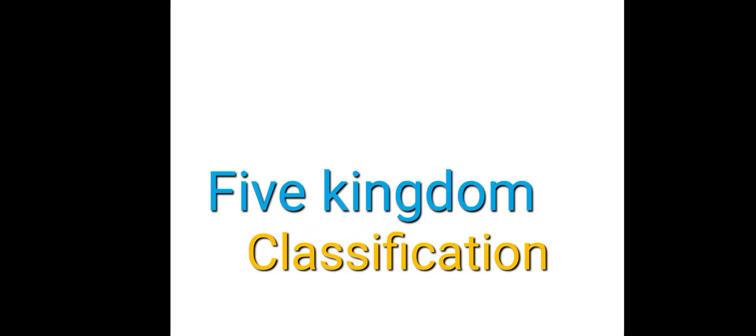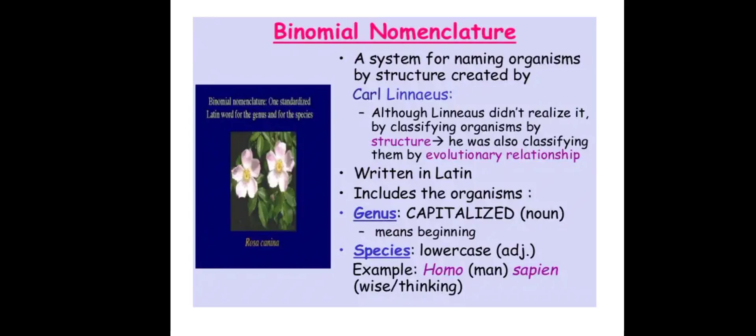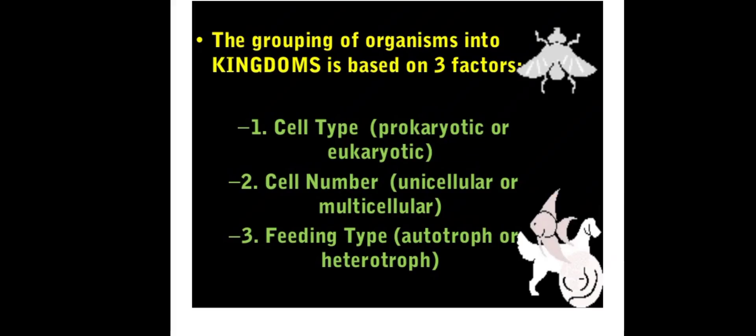Good morning class. In the previous lesson we started a new chapter — Five Kingdom Classification. We learned that classification is grouping based on similarities, taxonomy is the branch of biology dealing with classifying, grouping and naming organisms, and binomial nomenclature is the system for naming organisms, introduced by Carolus Linnaeus.